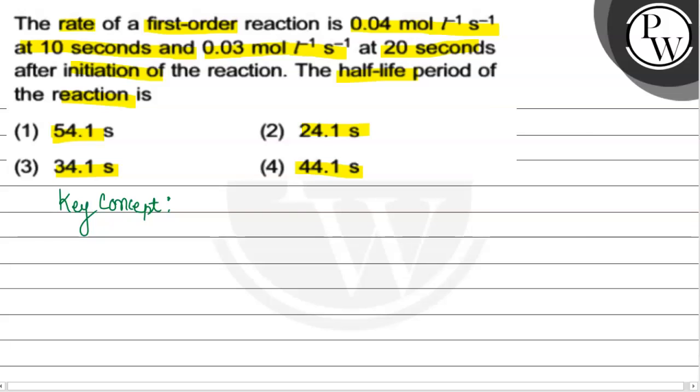First of all, the formula to find the rate constant, that is K equals to 2.303 upon T2 minus T1, where T denotes the time, log of concentration of reactant 1 divided by concentration of second reactant.